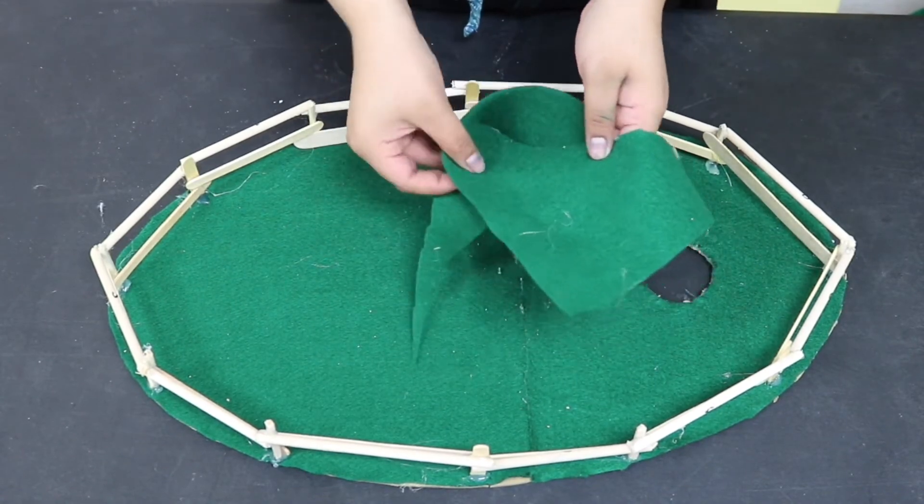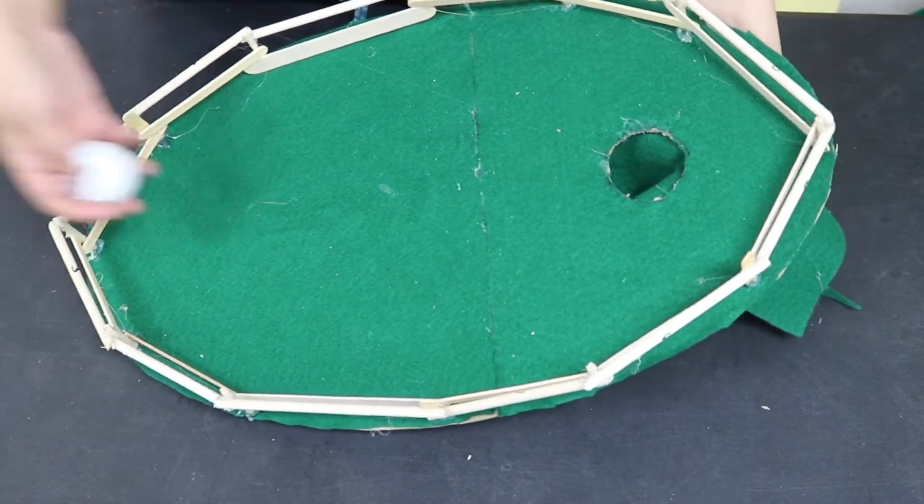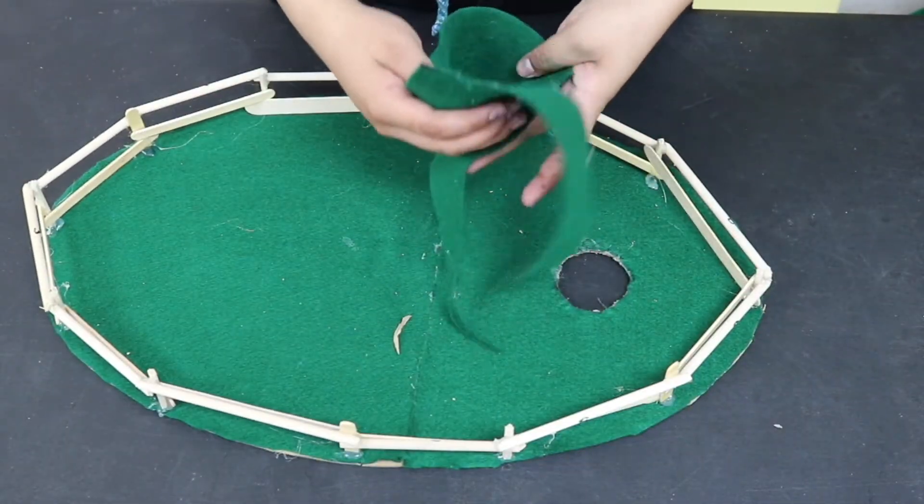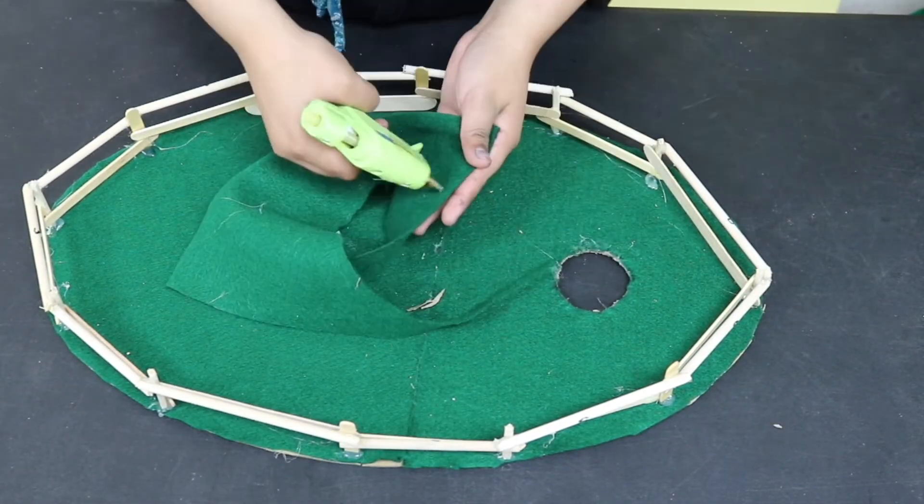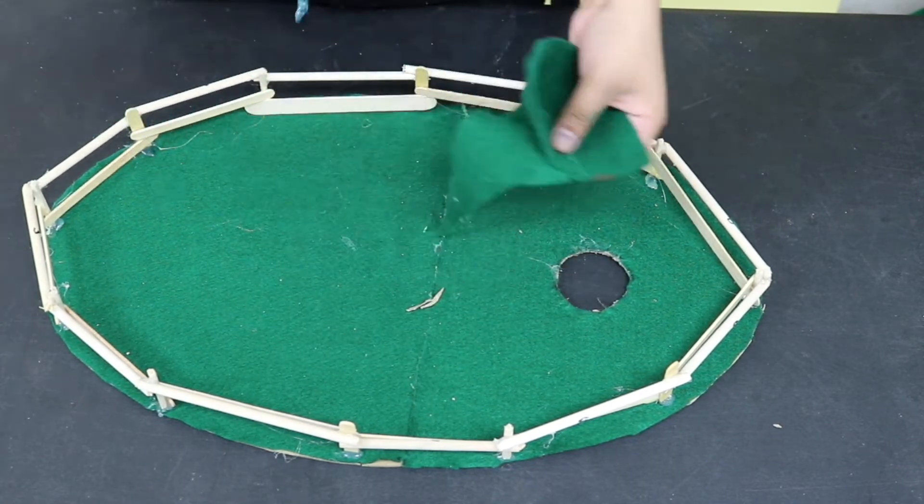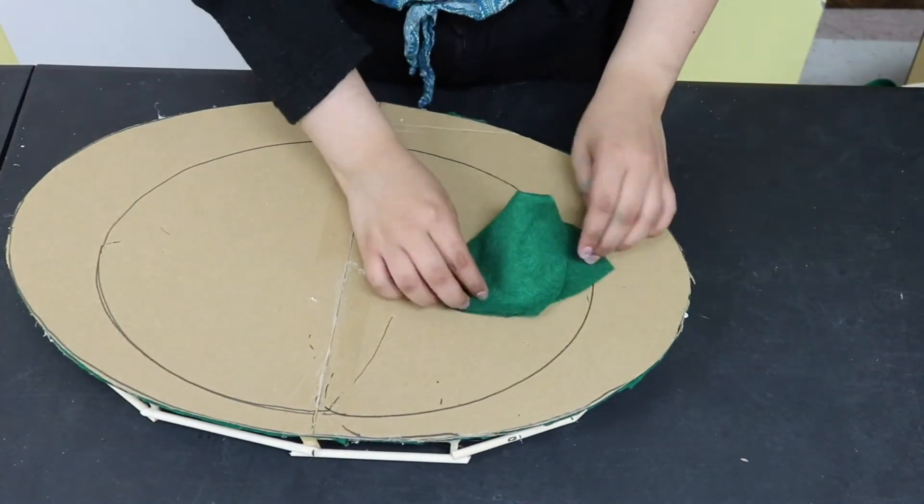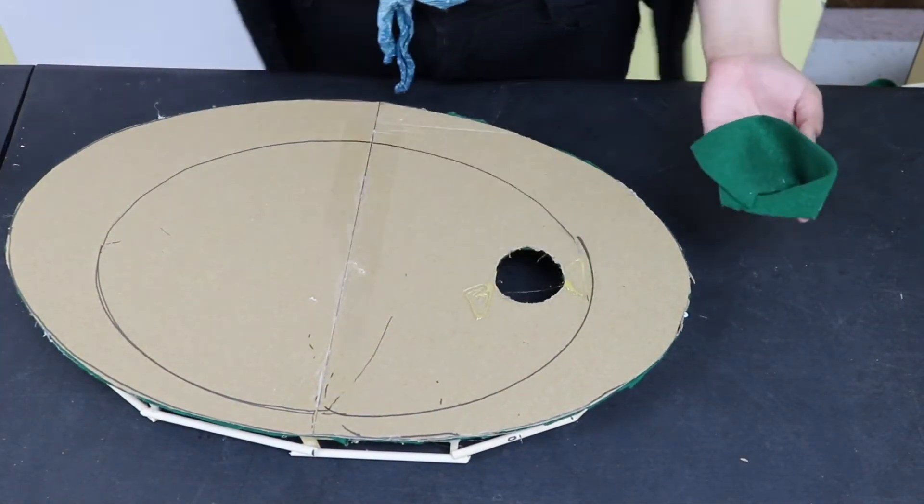We're going to need something to catch the ball in place. For this, we'll use the felt fabric to create a little funnel so once the ball goes into the hole, the funnel can catch the ball. Use your glue gun to glue your funnel together. Use your scissors to cut off any extra excess fabric, and then use your glue gun again to glue your funnel to the back of your pool table.